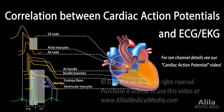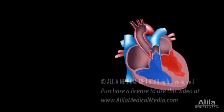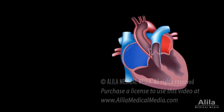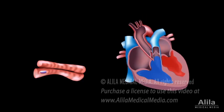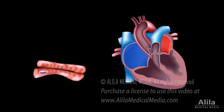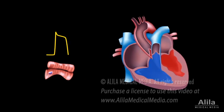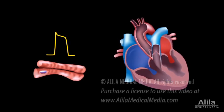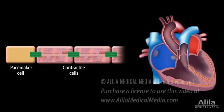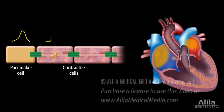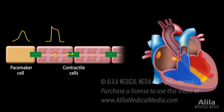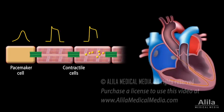The heart is essentially a muscle that contracts and pumps blood. It consists of specialized muscle cells called cardiac myocytes. The contraction of these cells is initiated by electrical impulses known as action potentials. Action potentials start in pacemaker cells, then spread to contractile myocytes and stimulate them to contract.